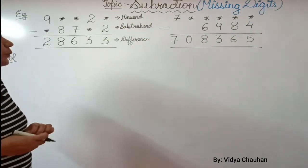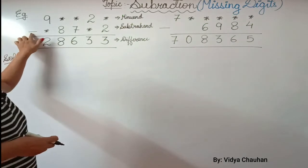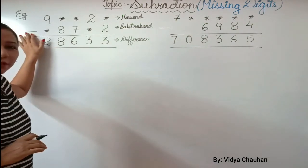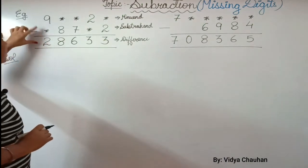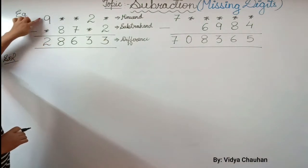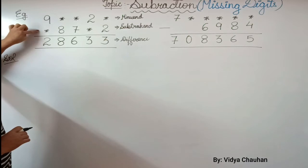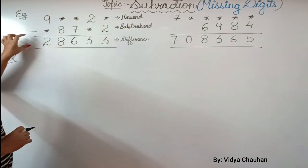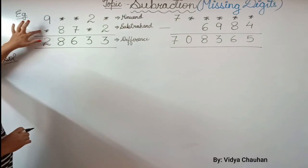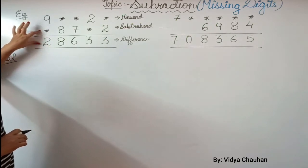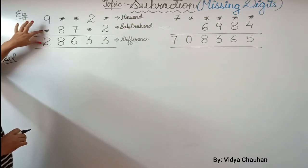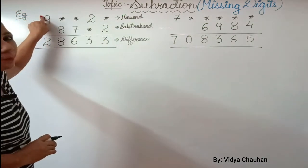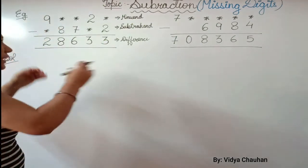Now, if there is any question with missing digits related to subtraction, the very easy method is: since both the minuend and subtrahend have some digits missing, what you will do is add the subtrahend and the difference, and the final answer will equal the minuend.